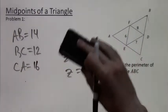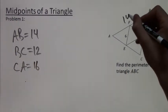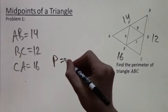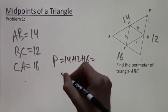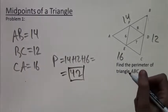So now it's really easy to find the perimeter, because we just add up the three side lengths of the triangle. We have 14, 12, and 16. So we add them and we get perimeter P equals 14 plus 12 plus 16. And when we add these, we just get 42. And that's the answer to the problem.